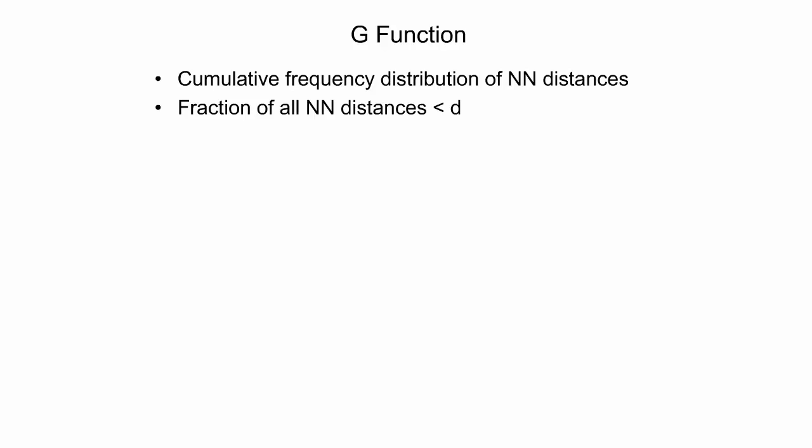A disadvantage of the mean nearest-neighbor distance is that it hides much of the nearest-neighbor information and presents only a single mean value. Therefore, a number of extensions to the nearest-neighbor approach have been proposed. One of these, the g-function, is the simplest. It examines the cumulative frequency distribution of the nearest-neighbor distances found in the point pattern.